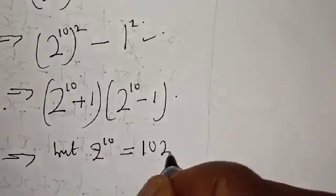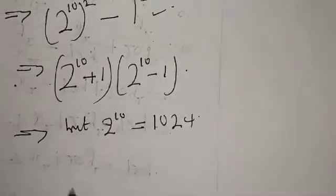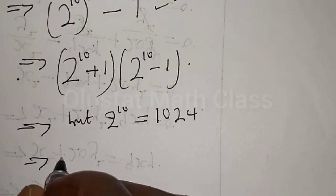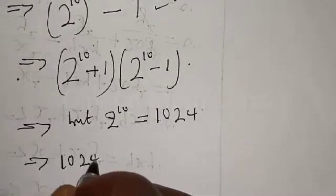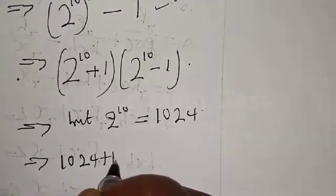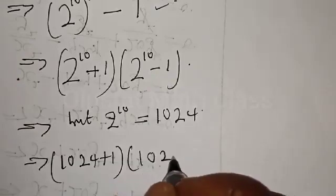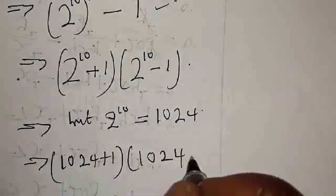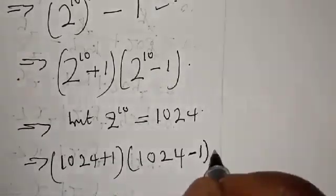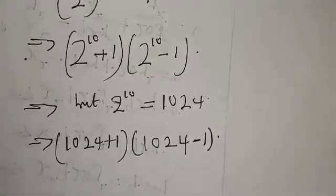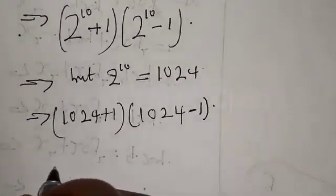Now, 2 raised to power 10 is 1024. This implies we have 1024 plus one, multiplied by 1024 minus one.